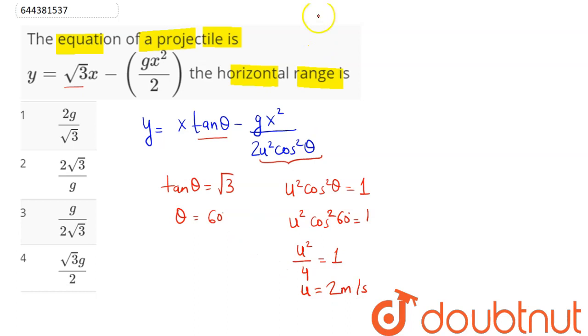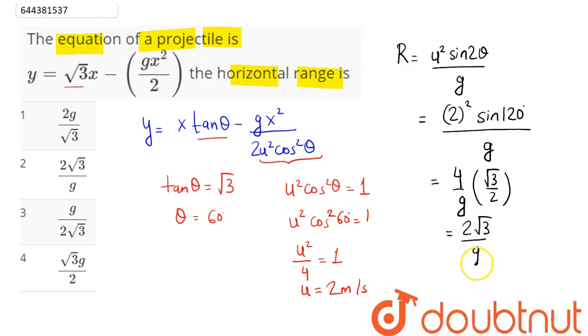So, we have the initial velocity and the angle, hence the horizontal range given by the formula as u square sine of 2 theta divided by g. Now, u here is 2 whole square sine of 2 theta, means sine of 2 into 60 is 120 divided by g. So, this comes as 4 upon g and sine of 120 is equal to root 3 by 2, as this comes out to be 2 root 3 divided by g is the range of this projectile motion.